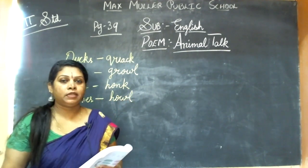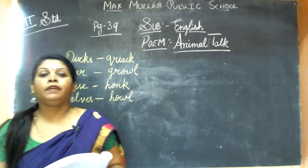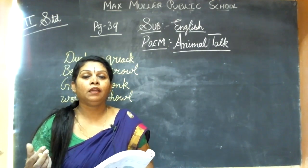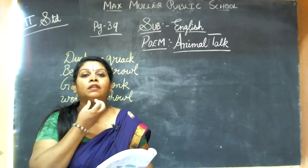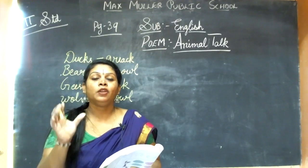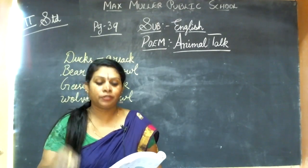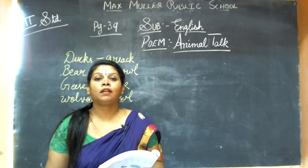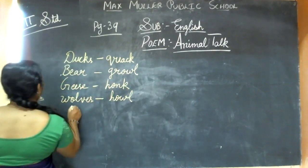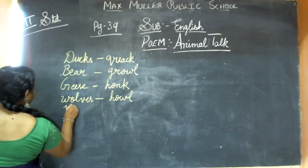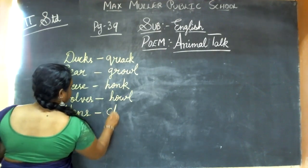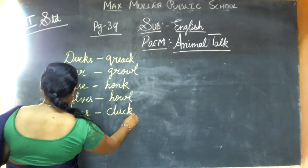Hens cluck. When you can see the hen moving around, it makes cluck, cluck, cluck. Near the throat it has got a red color, you see, and it produces that cluck sound. Hens cluck.